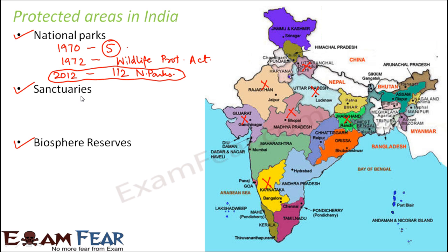Now let us talk about the wildlife sanctuaries. Wildlife sanctuaries especially take care of the animals. They ensure that animals are being protected and are staying in an environment which is their natural habitat. So it gives special protection to animals, and if you look at the number of wildlife sanctuaries in India, it is approximately 515. Some of the examples are Rajgir Wildlife Sanctuary present in Bihar.